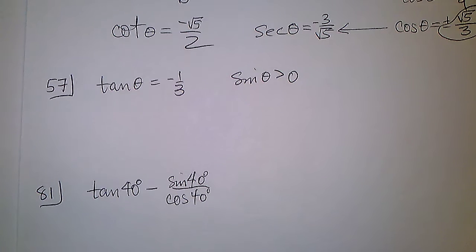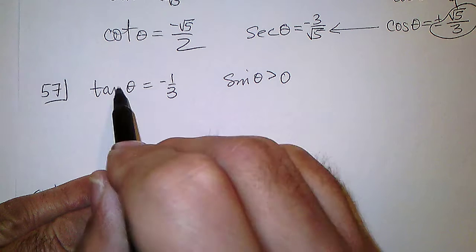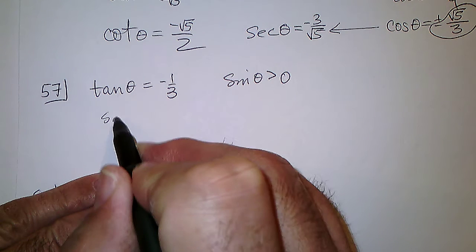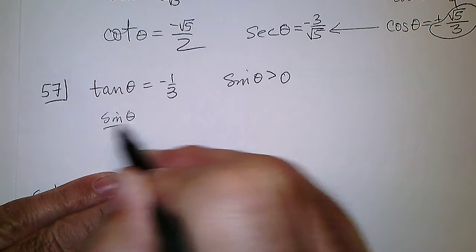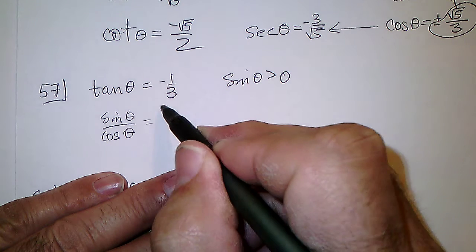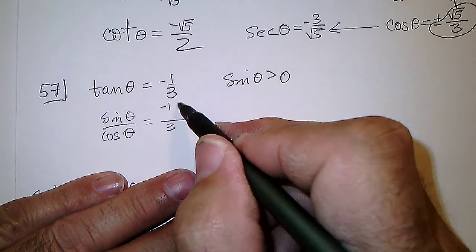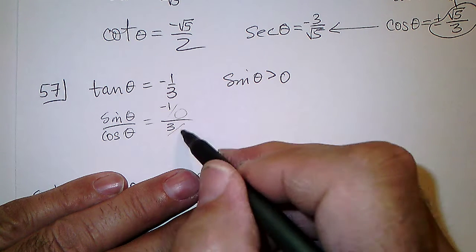Well, the tangent is the sine of the angle over the cosine of the angle, so that could be minus 1 over 3, but they both could be over a common denominator.